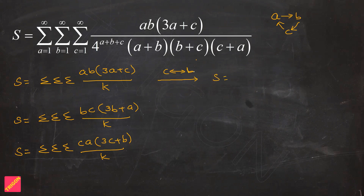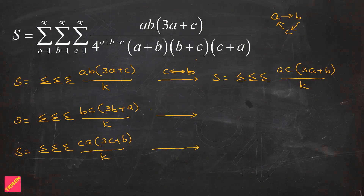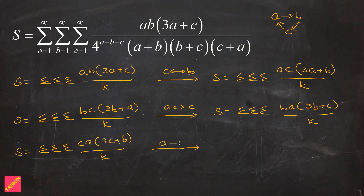After interchanging b and c in the first summation, S becomes the triple summation of ac·(3a+b)/k. Similarly, in the second summation we interchange a and c — since we had 3b+a and want 3b+c — giving S equal to the triple summation of ba·(3b+c)/k. And in the third summation we interchange a with b, giving S equal to the triple summation of cb·(3c+a)/k.